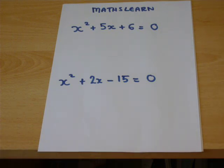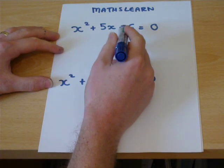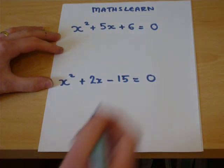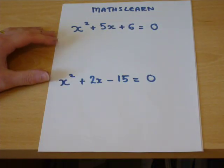So x squared plus 5x plus 6 equals 0. Now then, these are solved as long as one has equal to 0 on the right hand side.